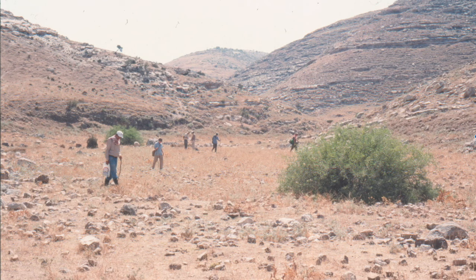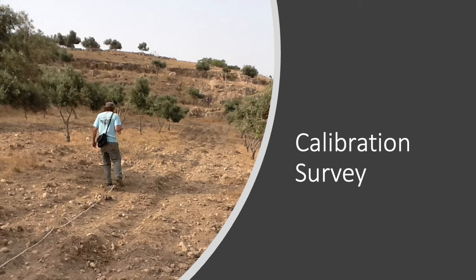Having at least rough estimates of our sweep widths clearly has implications for how widely spaced our surveyors should be—in other words, it informs our decisions about survey intensity, or the spacing between surveyors. It also helps us evaluate our survey's thoroughness so that afterwards we can tell people we've probably discovered a certain percentage of the artifacts or sites in a region. The only effective way to estimate sweep widths is by calibration surveys: we seed a field with artifacts in known locations and have surveyors survey it multiple times, calculating sweep widths on the basis of how often they successfully detected artifacts at different distances from the transect line.